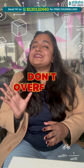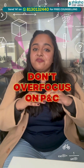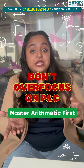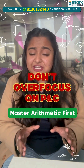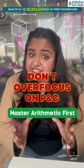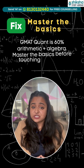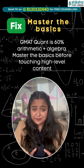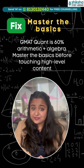Another classic error among Indian students is wasting a great deal of time on permutation-combination while poorly scoring on arithmetic — where GMAT actually tests you. The weightage of GMAT quant is 60% arithmetic plus algebra. Master the basics before touching the high-level content.